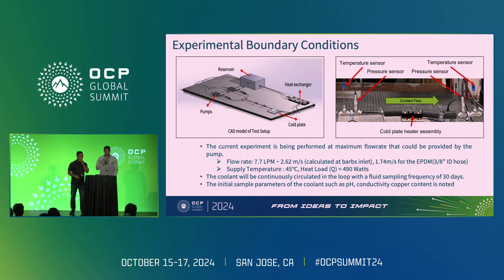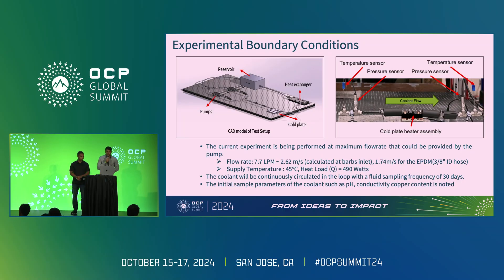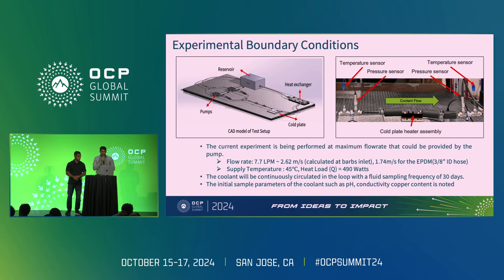Hello everyone. The experimental setup consists of a copper cold plate which is mounted onto a heater base, and it mimics a data center scenario where a cold plate is mounted onto a CPU or GPU, and heat is being carried away by the coolant going into the microfin channels. There is a heat exchanger present inside the cold loop, which is used to maintain the coolant at the desired temperature, and a reservoir to have an ample amount of samples so that we can collect samples at regular intervals to analyze the coolant. There are two pumps used for this closed loop to help circulate high flow rates of coolant through the cold plate.